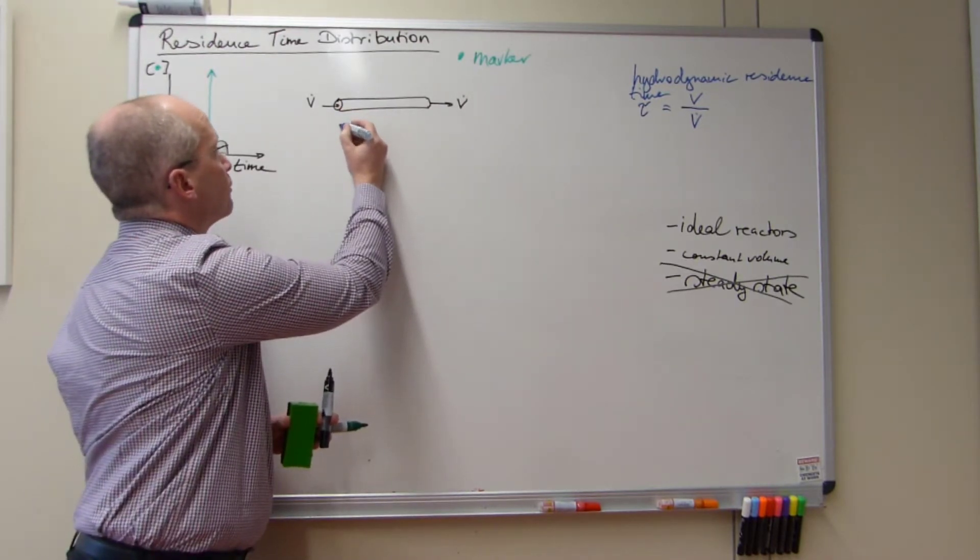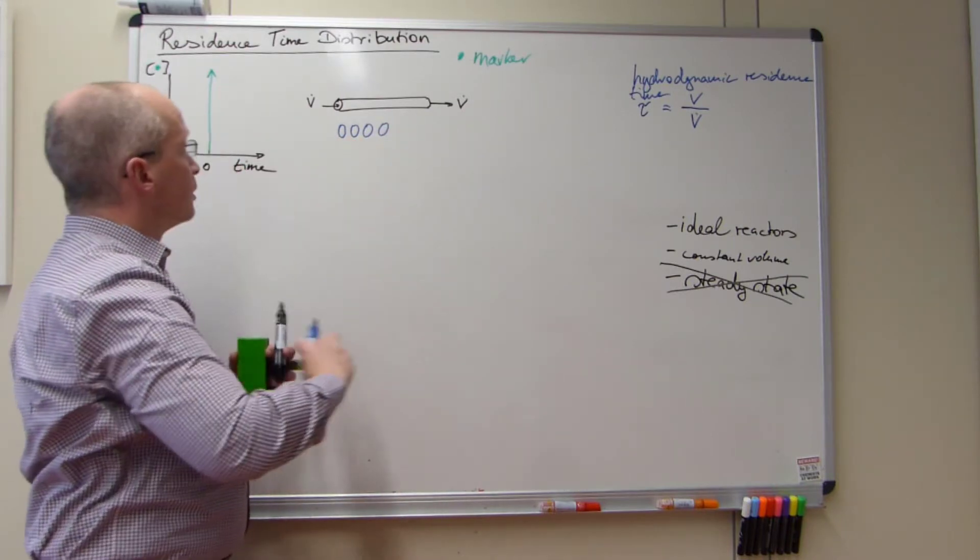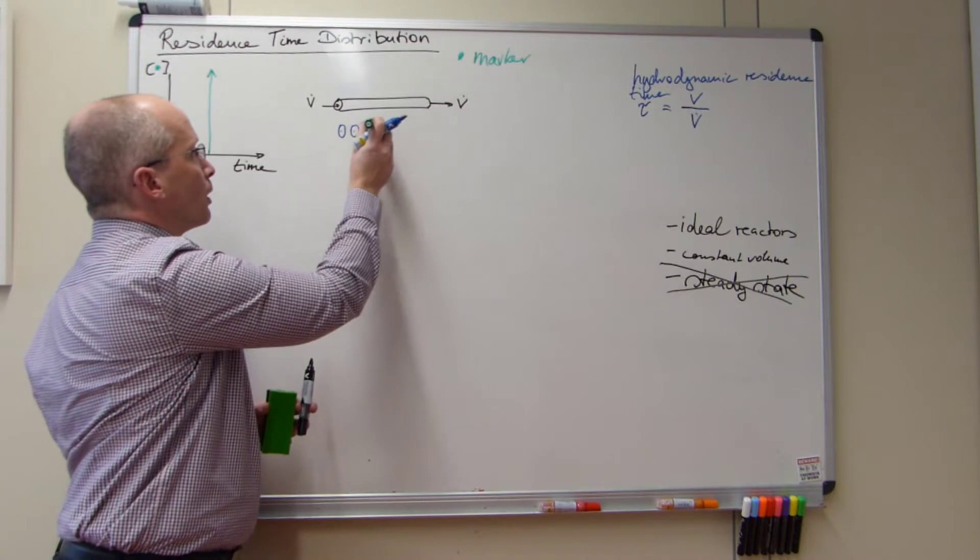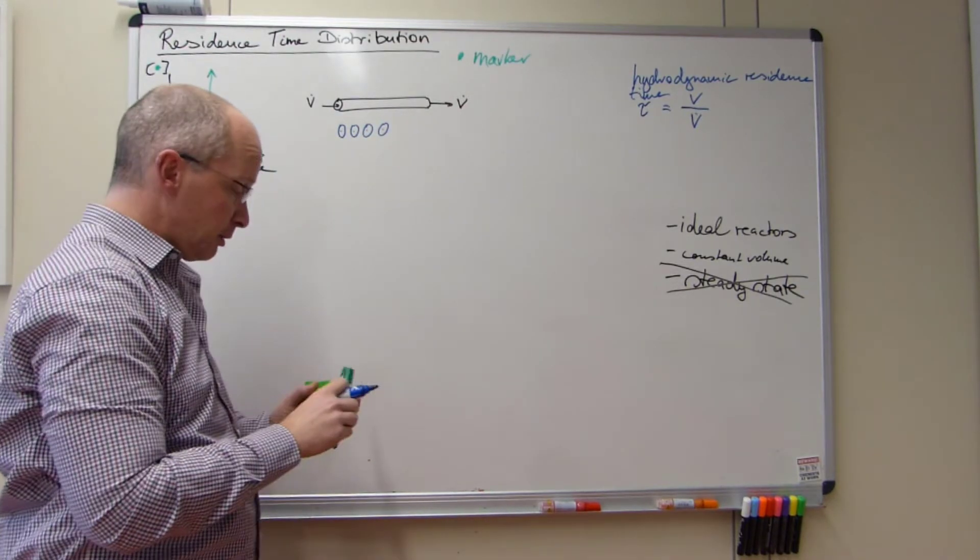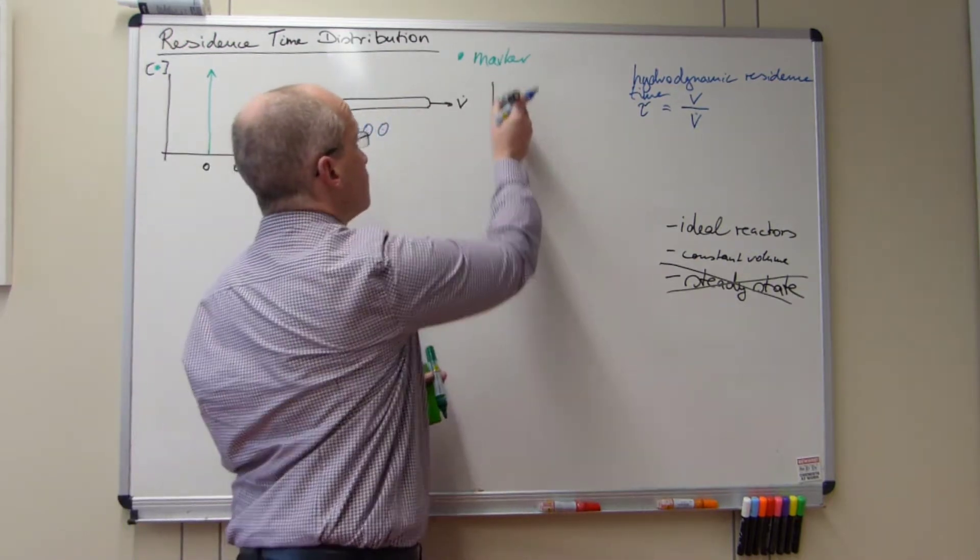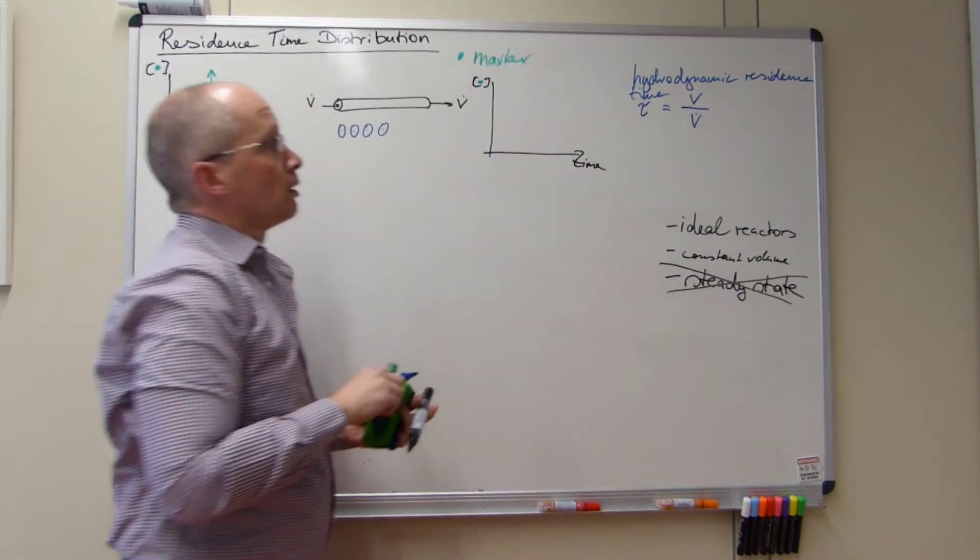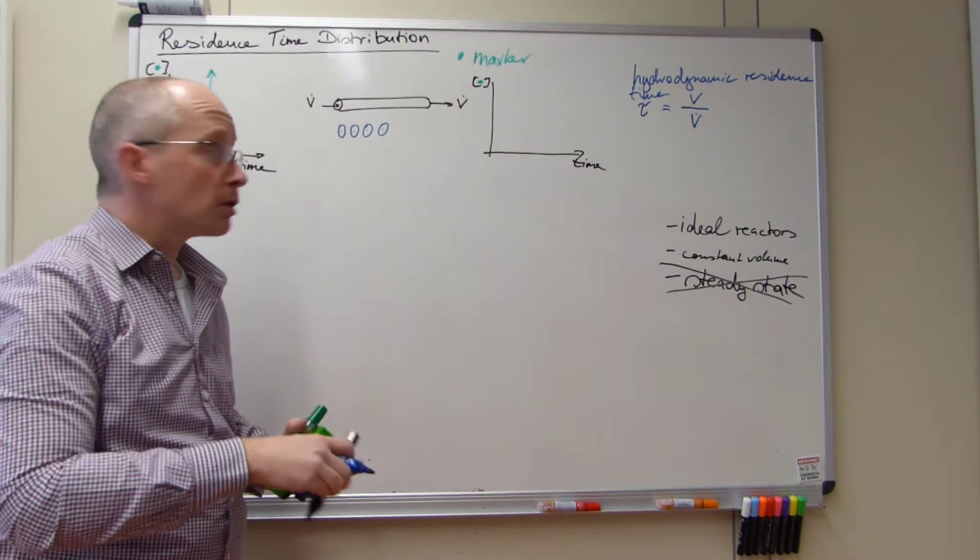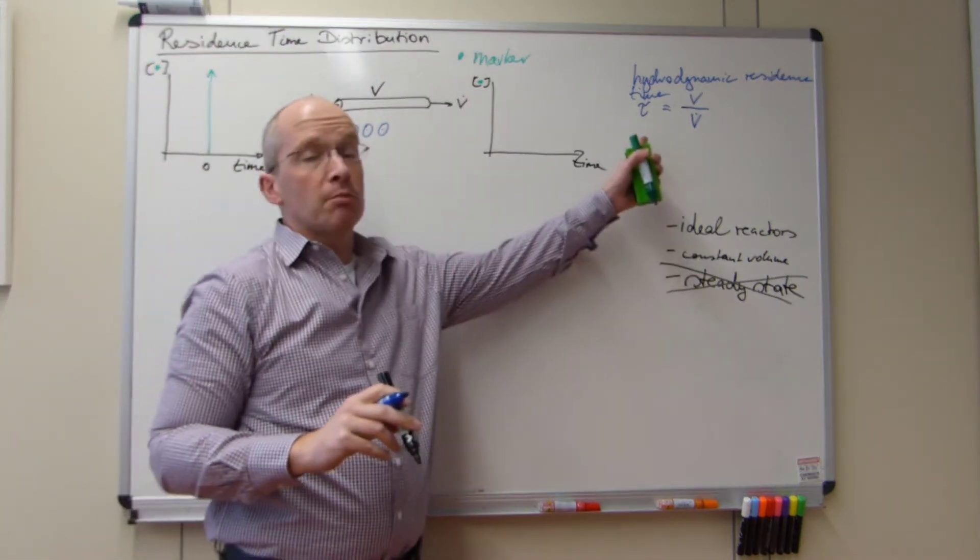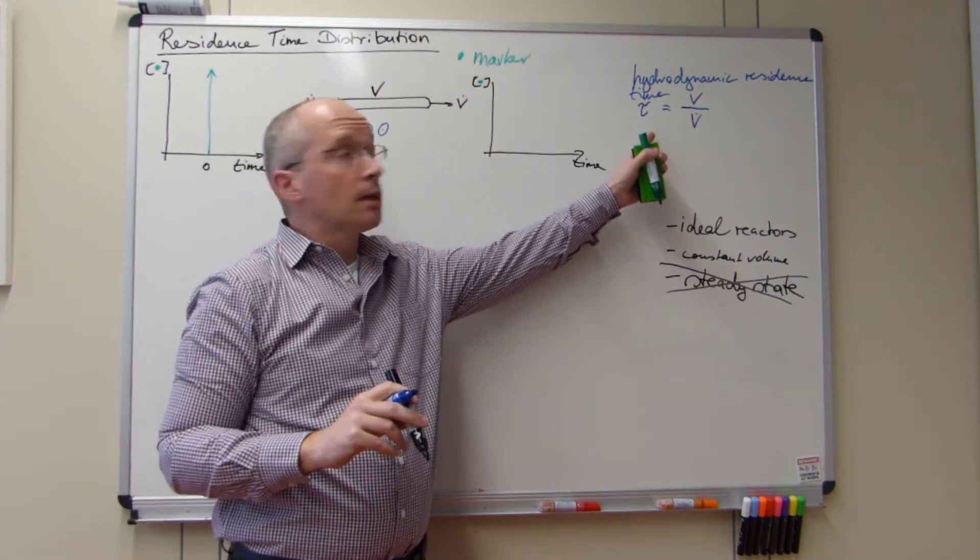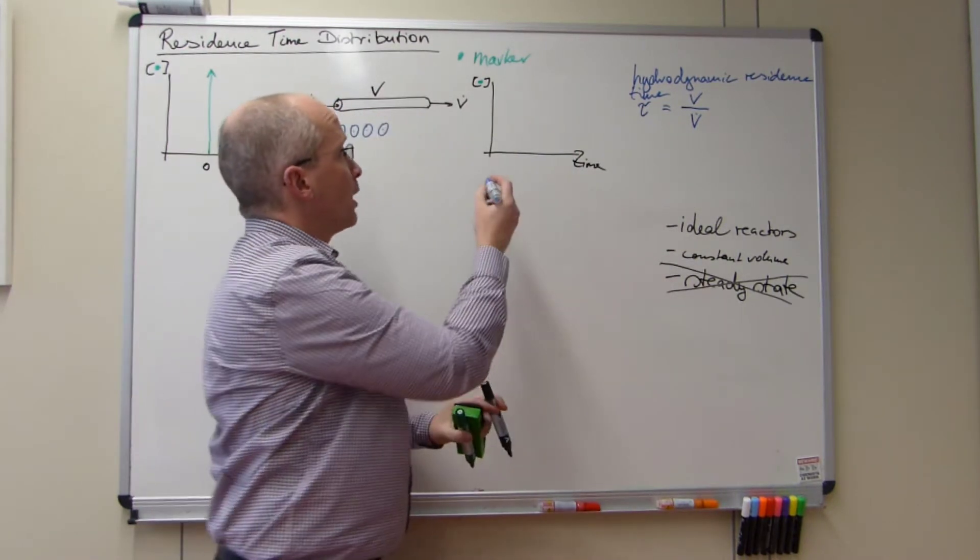So what we effectively have is that we have these kind of cross sections in series. And this marker will now jump from one to one to one to one and so on. When will we see it again? And that is most conveniently if we have a volume of the reactor. This will again be given by our hydrodynamic residence time here.